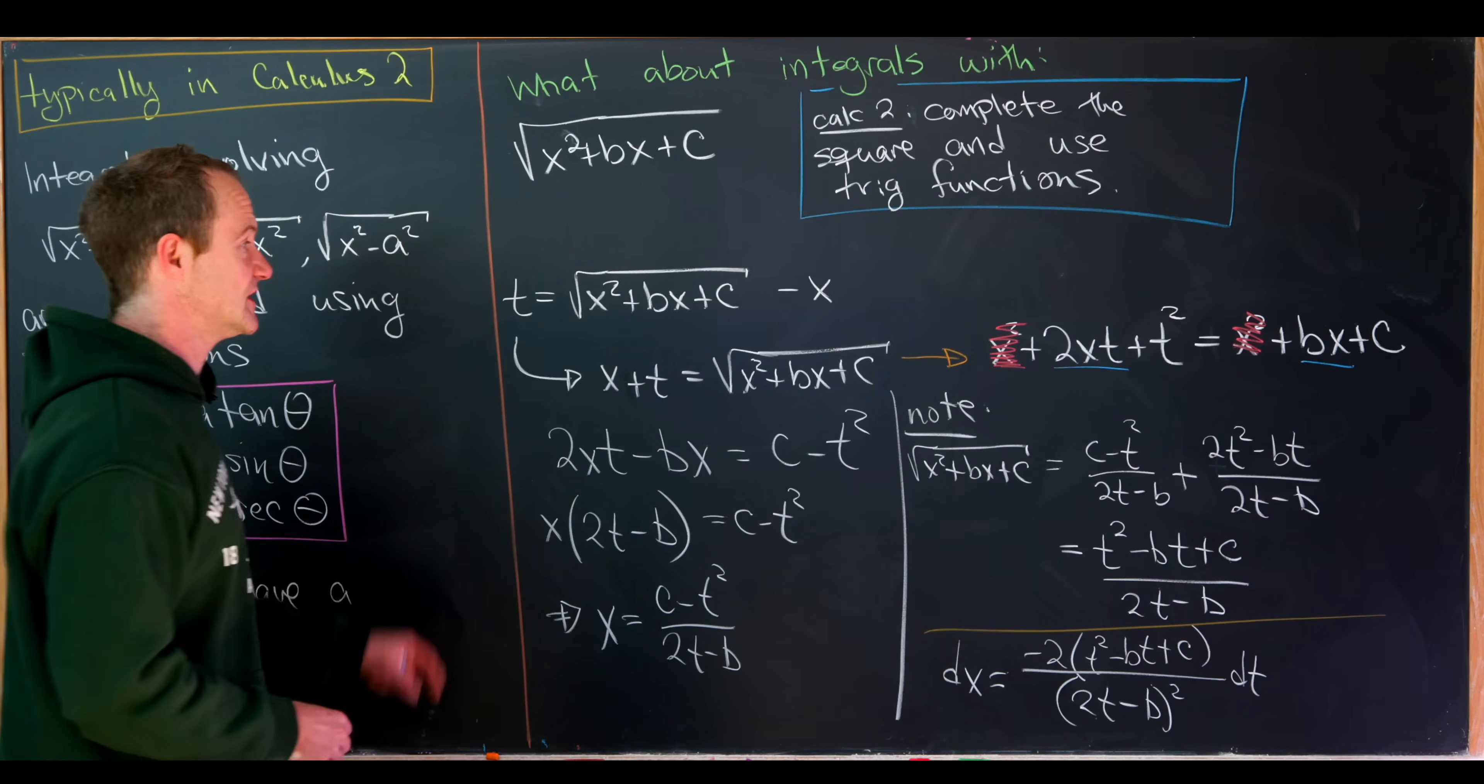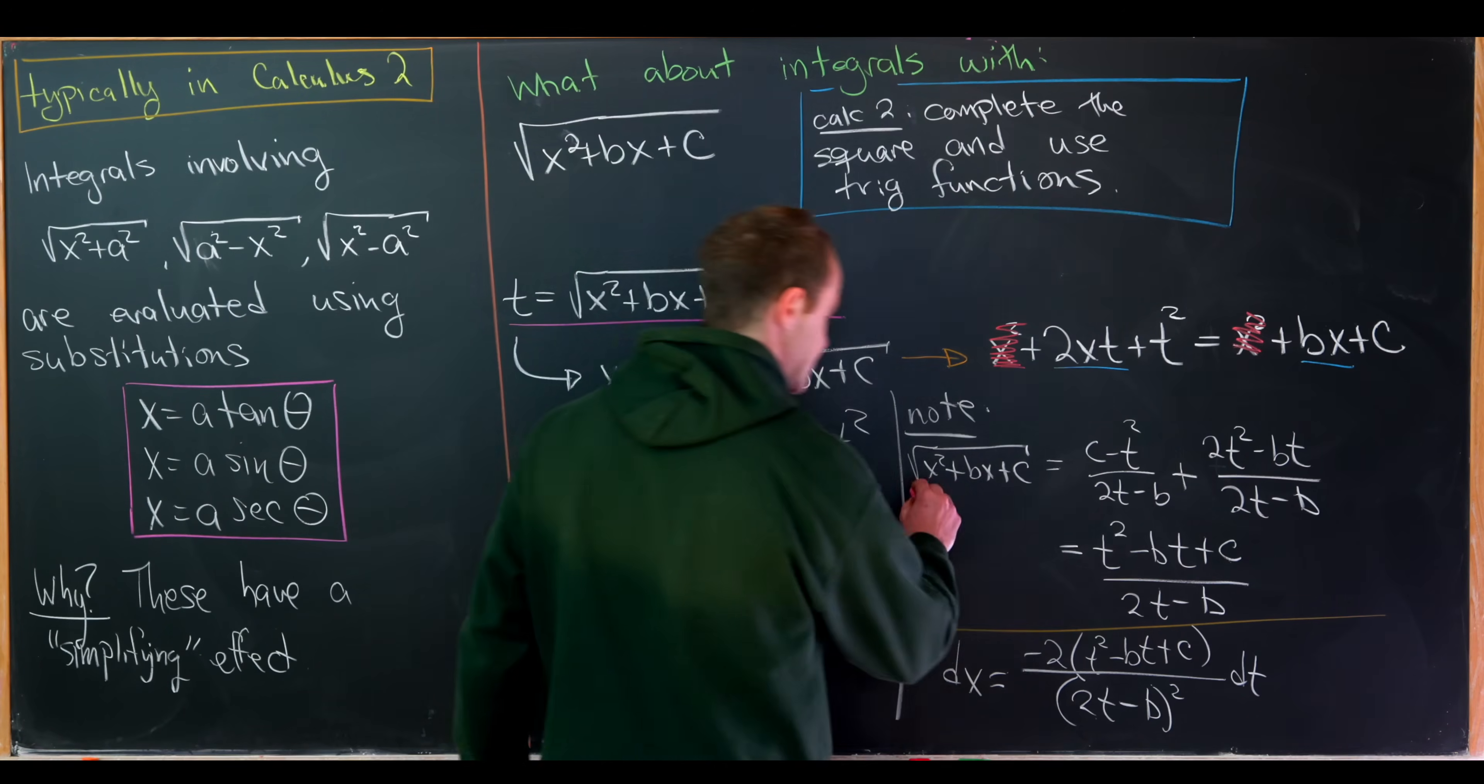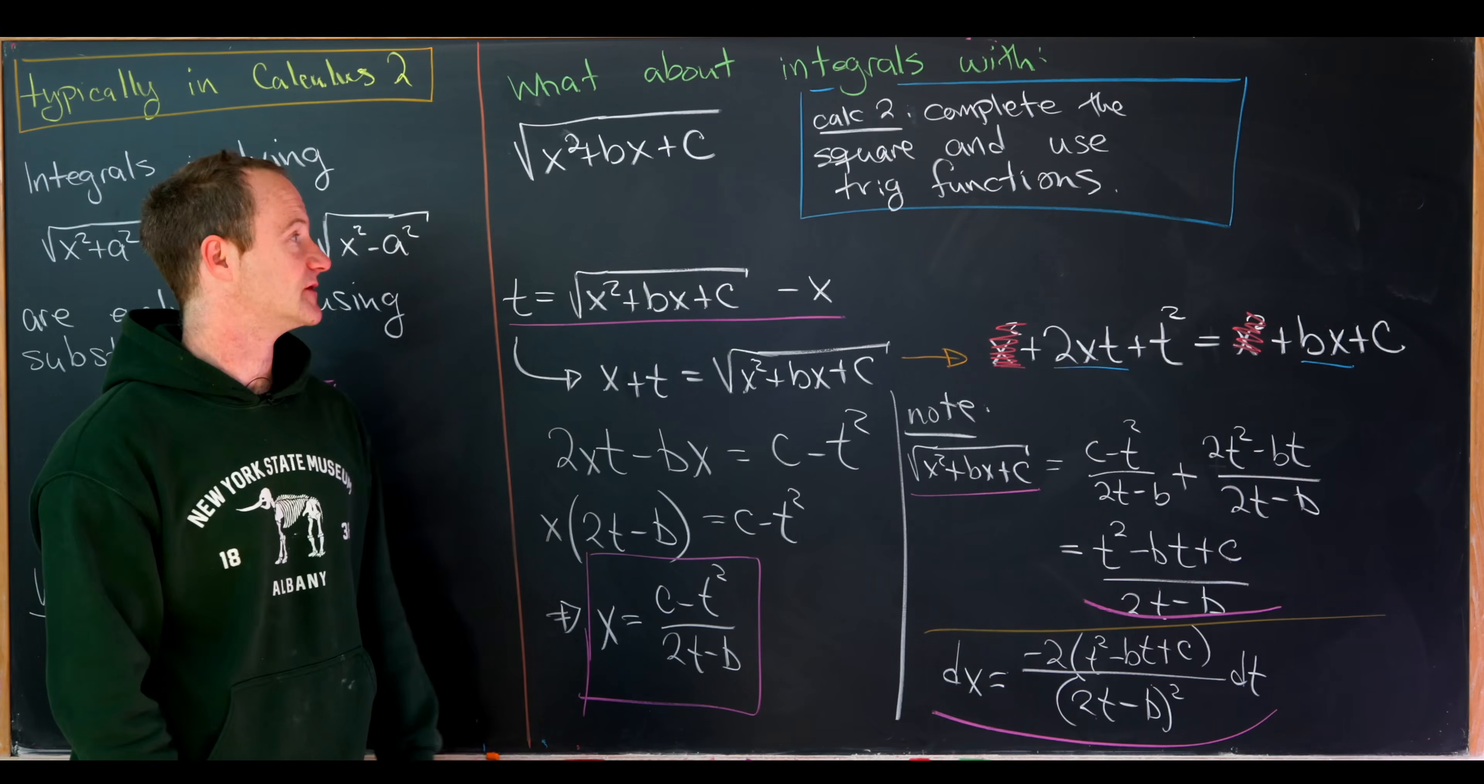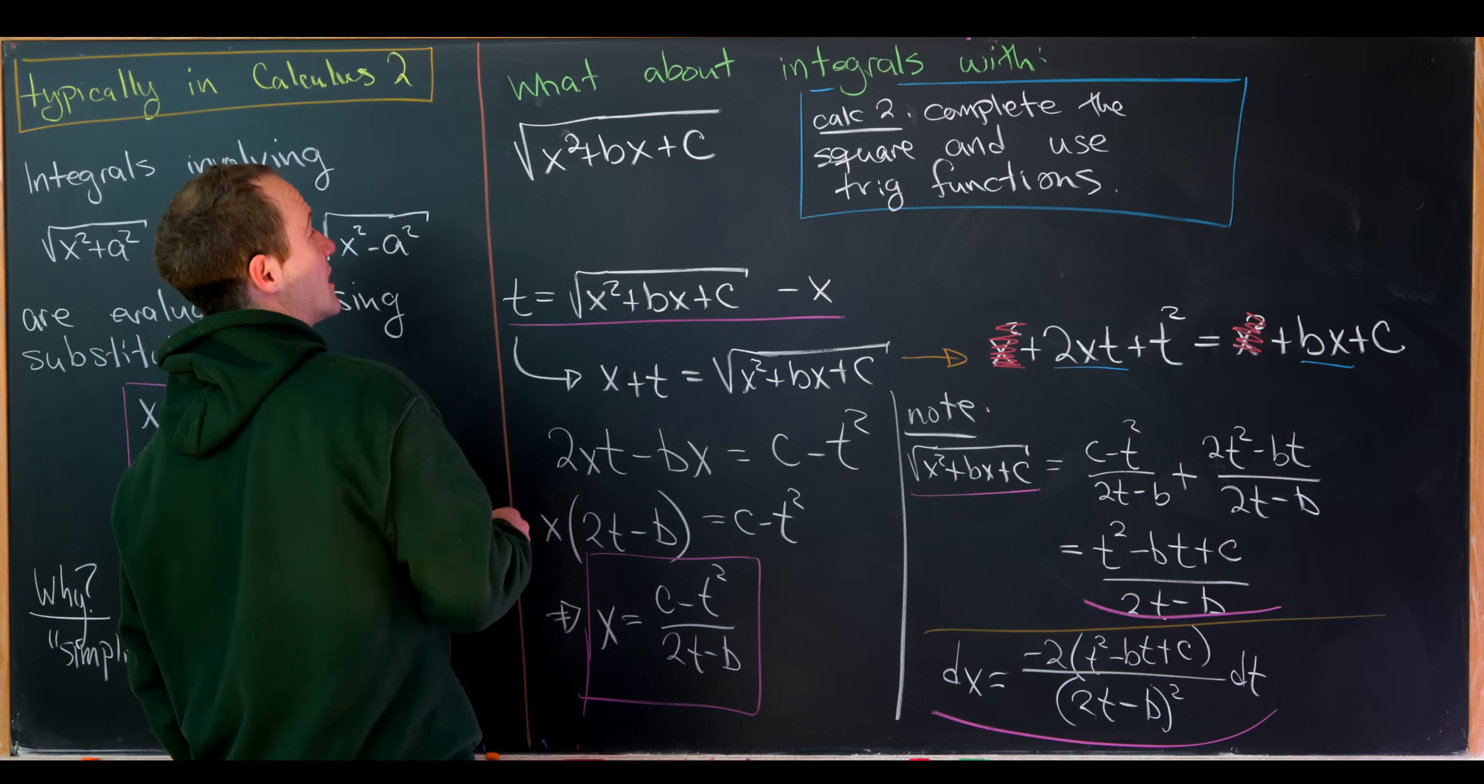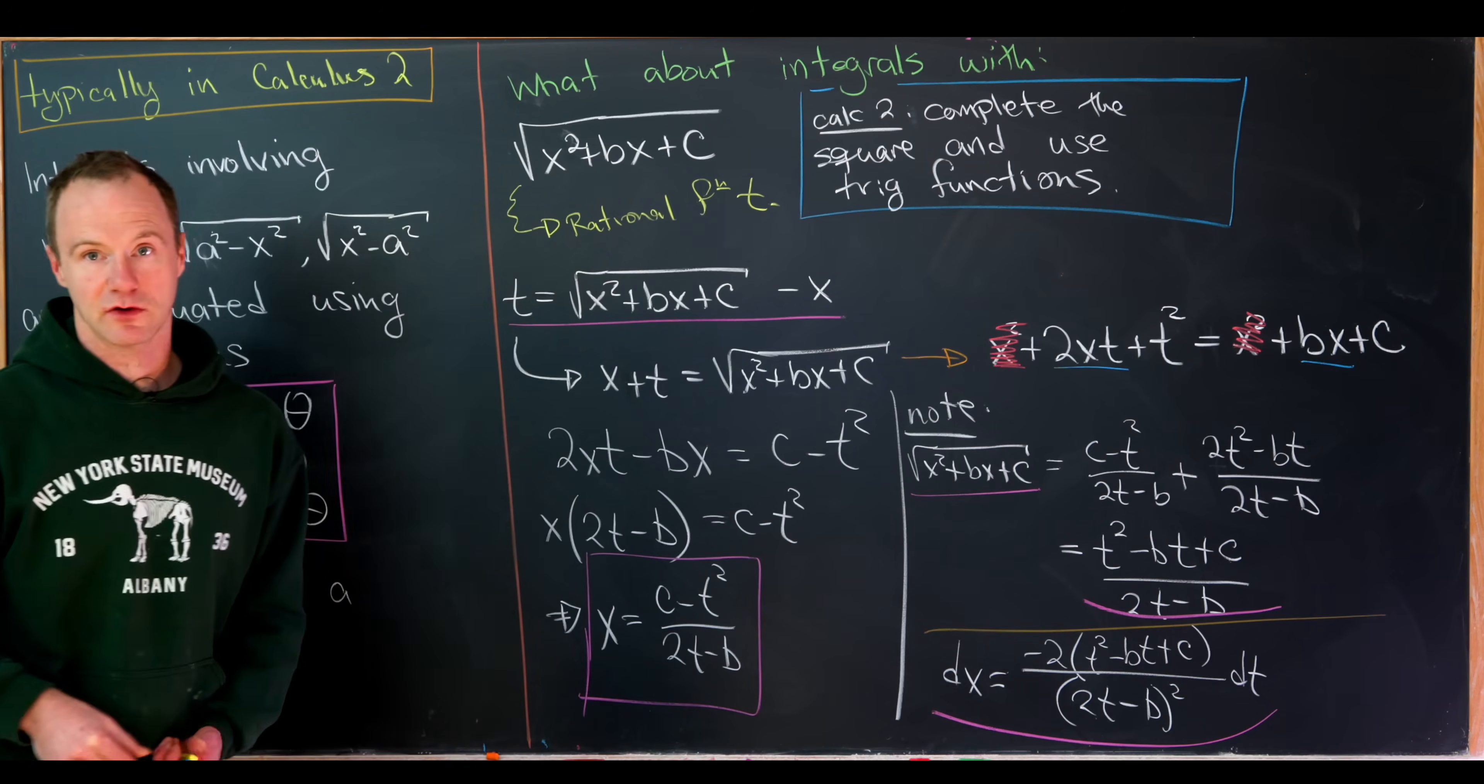So the substitution that we'll make, which is motivated by setting t equal to this, is x equals c minus t squared over 2t minus b, which turns this square root object into this rational function of t. And it turns dx into also this rational function of t. So that means we'll start with something that involves the square root of x squared plus bx plus c, and this will turn it into some sort of rational function where t is the variable.